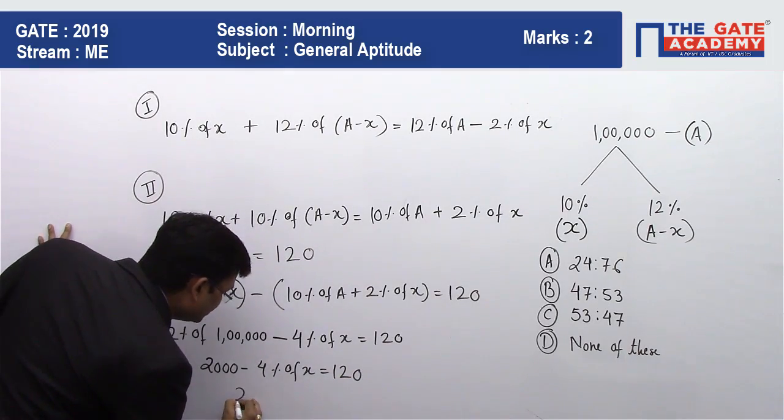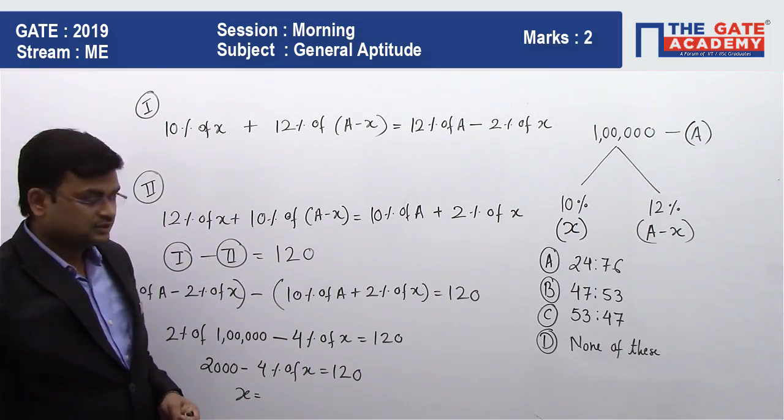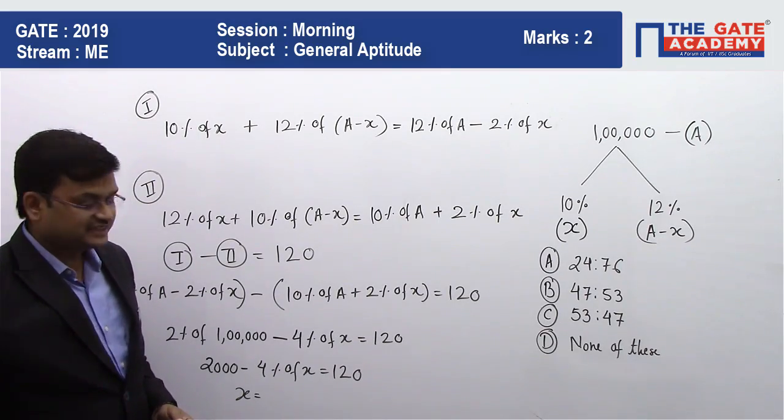So my X value, if I simplify this, my X value comes out to be 47,000.